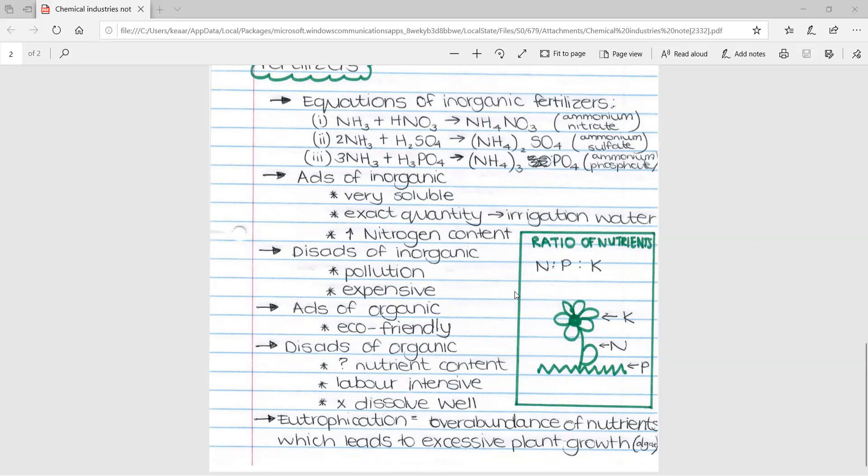Then, when you are doing these questions, a very common question that comes up is calculating the ratio of nutrient contents. It's important to remember that the ratio is always given in this format, NPK. So, it's always nitrogen to phosphorus to potassium.